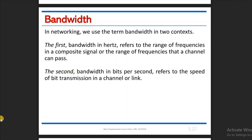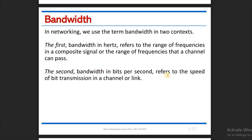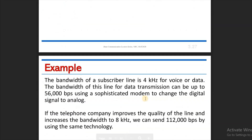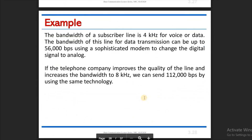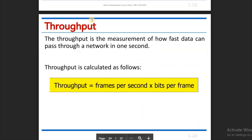Bandwidth in bits per second refers to the speed of bit transmission in a channel or link per unit time when data is transmitted. Bandwidth is the measurement of how fast data can pass through a network in one second.